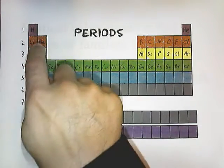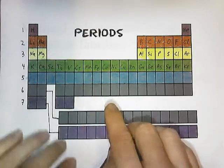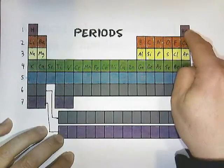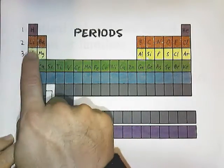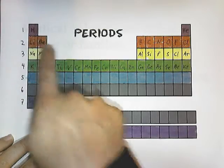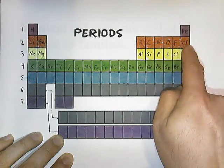Period one, in red right here, contains elements hydrogen and helium. Period two contains elements lithium, beryllium, boron, carbon, nitrogen, oxygen, fluorine, and neon.